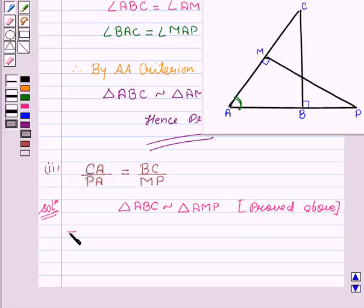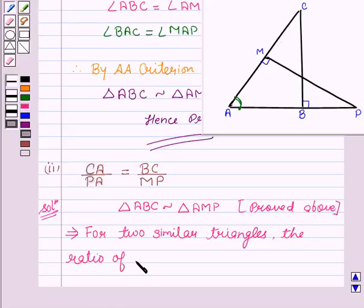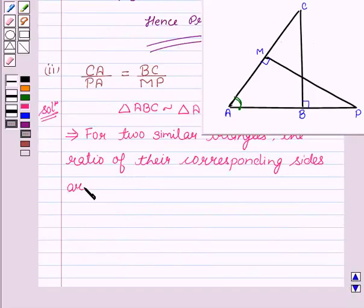Therefore, we know that for two similar triangles, the ratio of their corresponding sides are equal.